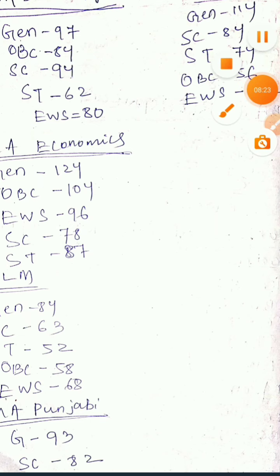Next, MA in Punjabi: General mark is 93, SC is 82, ST is 62, OBC is 73. Next, MA Hindi: General is 84, SC is 75, EWS is 63.